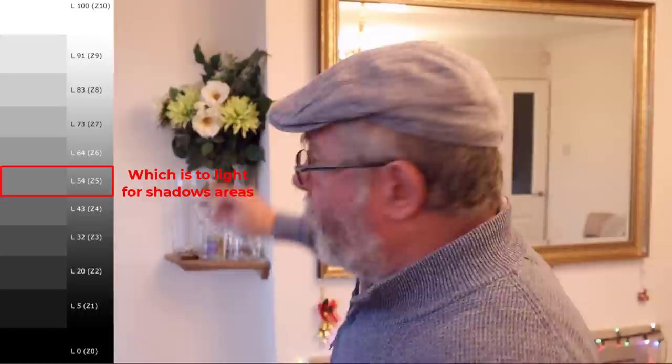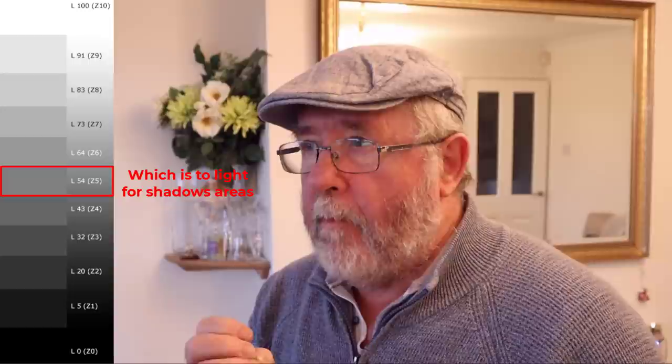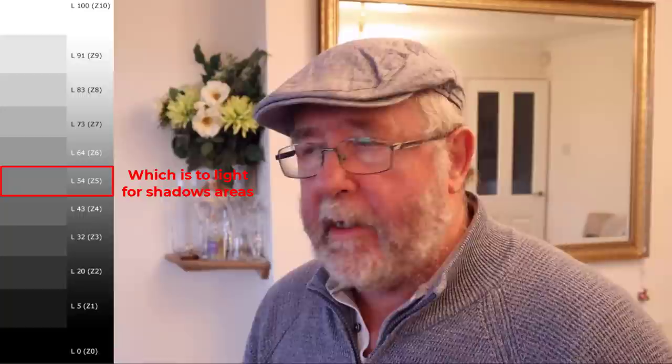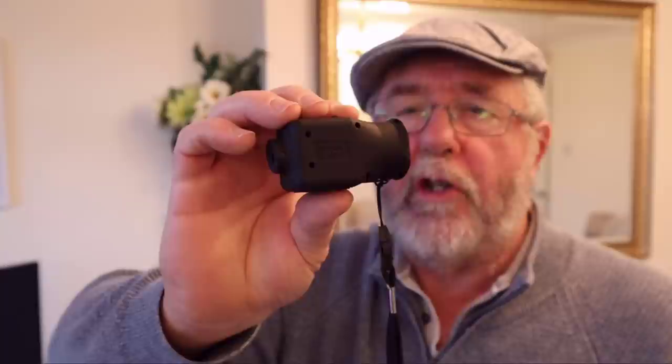I'm going to take a meter reading in the shadow area of the flowers. If I just pointed this spot meter at that area and went with that reading, it would turn this shadow area into Zone 5 - all meters do that. So to get that area down to Zone 3 where I'll get some textural shadow detail, I have to put in a minus two compensation, bringing it from Zone 5 down to Zone 3.